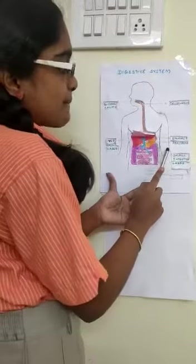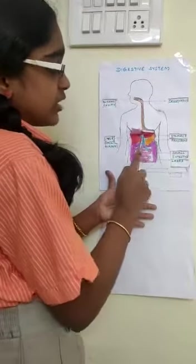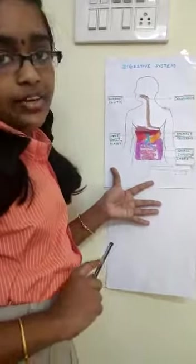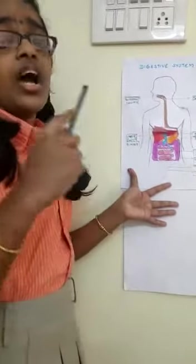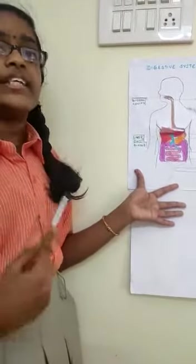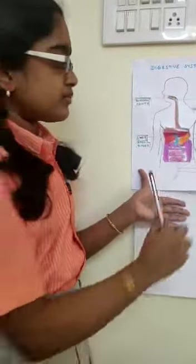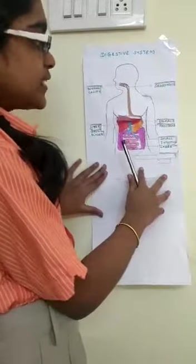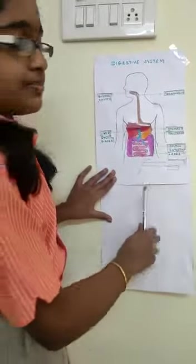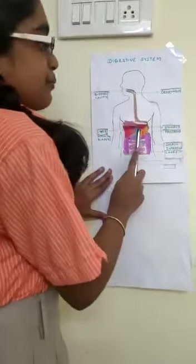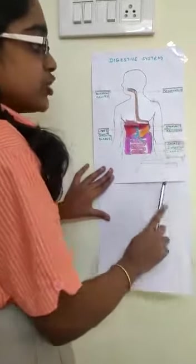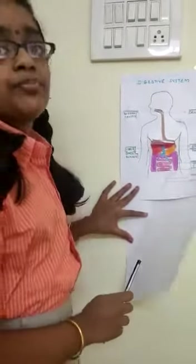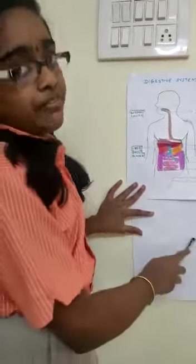The pancreas is a cream-colored gland which is located just below the stomach. It secretes a juice known as pancreatic juice. Pancreatic juice acts on carbohydrates, proteins, and fats.